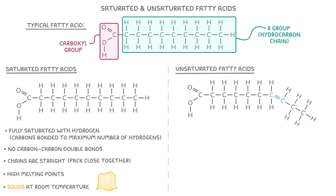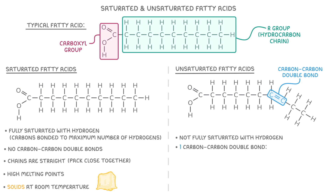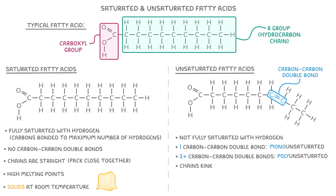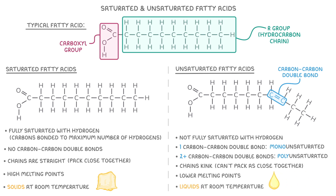On the other hand, unsaturated fatty acids have hydrocarbon chains that are not fully saturated with hydrogen, and they have at least one carbon-carbon double bond. If there's only one carbon-carbon double bond, it's called a monounsaturated fatty acid. But if there are two or more carbon-carbon double bonds, it's called a polyunsaturated fatty acid. Importantly, the angle of these carbon-carbon double bonds causes the chains to kink, meaning they can't pack as close together as saturated fatty acids can. So lipids with unsaturated fatty acids have lower melting points, making them liquids at room temperature.